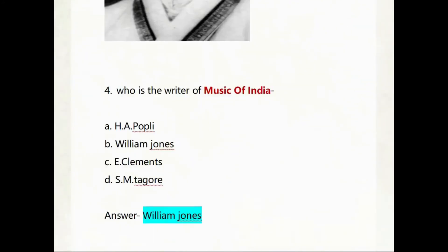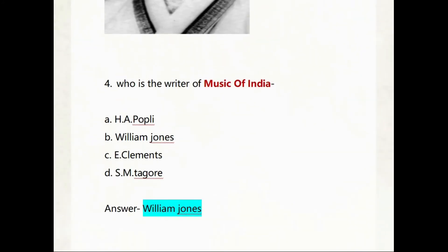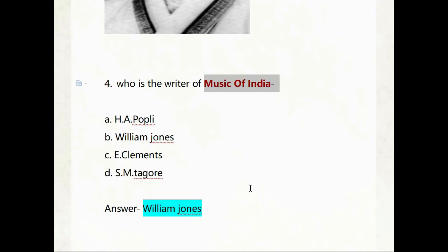William Jones is the writer of 'Music of India.' This book is especially important because it was written by a foreigner — he was not from India — so this book becomes a little bit more significant.